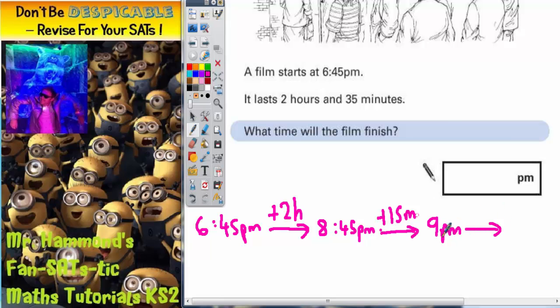And then from 9pm, how much longer do we need to add on? Well we've done the 2 hours and we've done 15 minutes of this 35 here. So 15 to 35 you need to add on an extra 20 minutes because 15 and 20 makes 35.